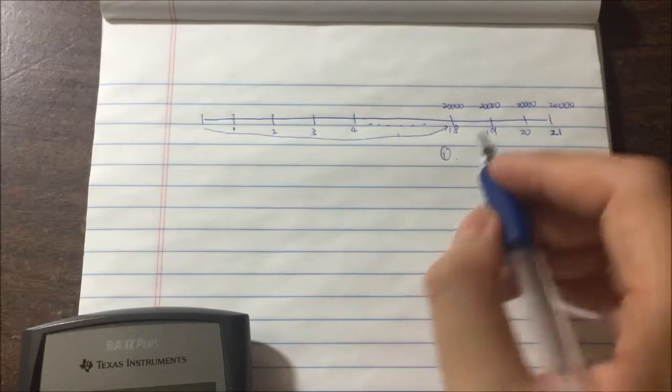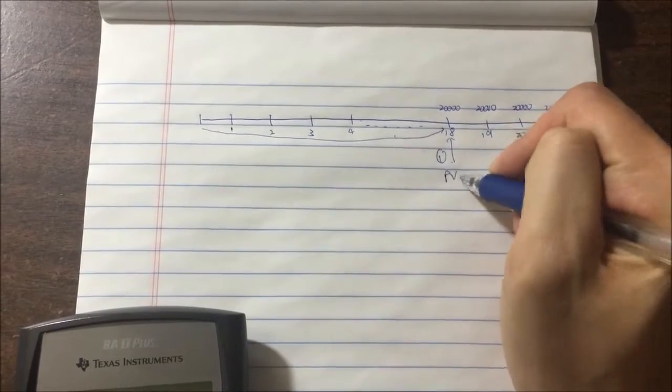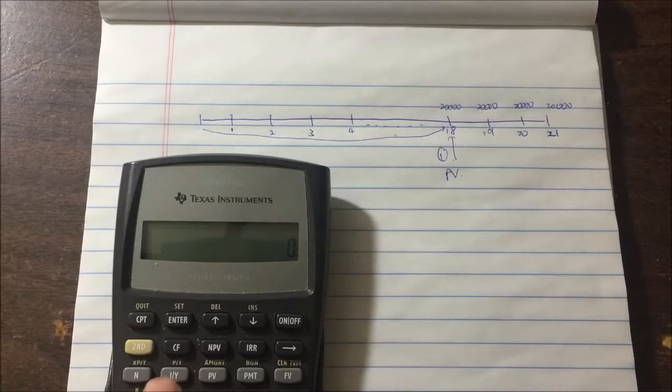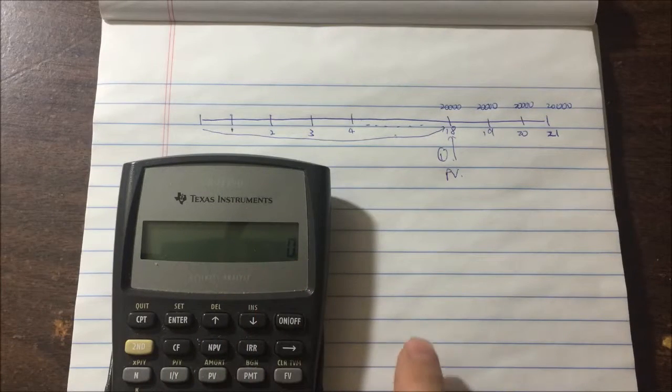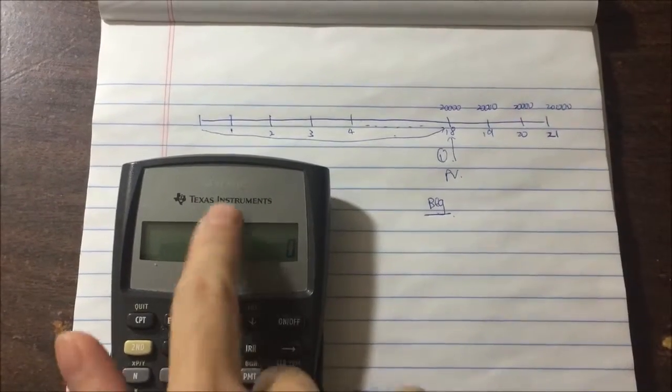Let's break it down. What is the present value at this point? The first thing we have to check is the client is paying at the beginning. The keyword is 'beginning of the year,' so we set the BA II Plus to beginning mode.